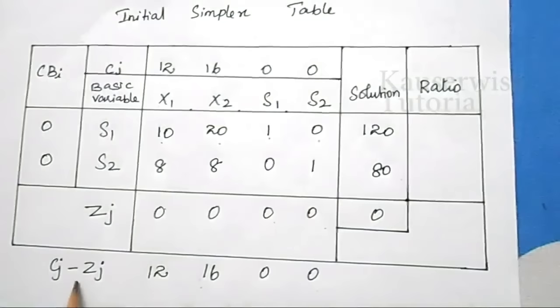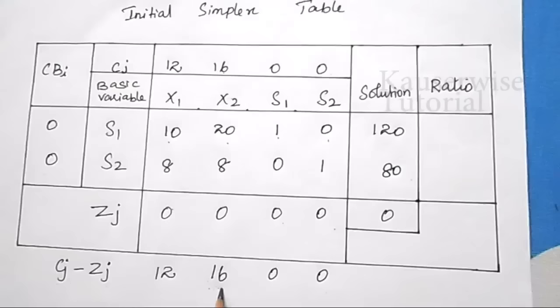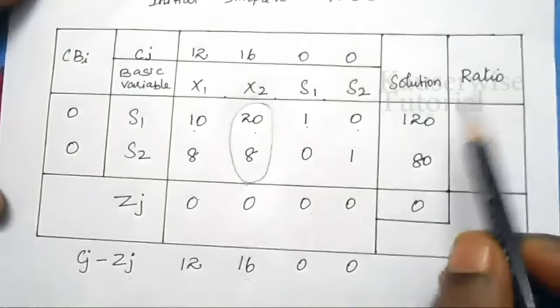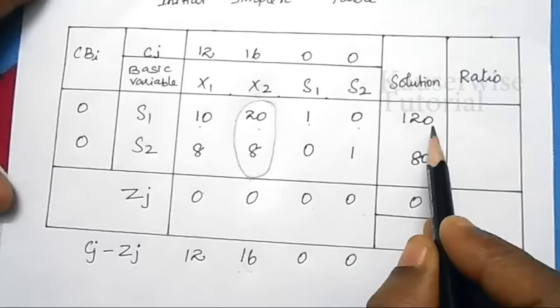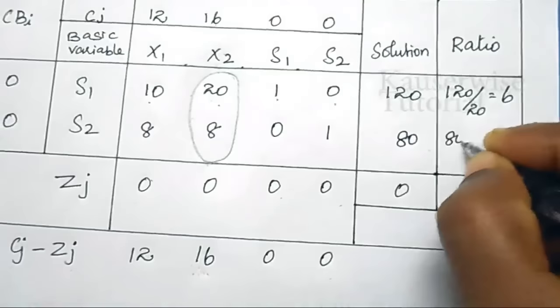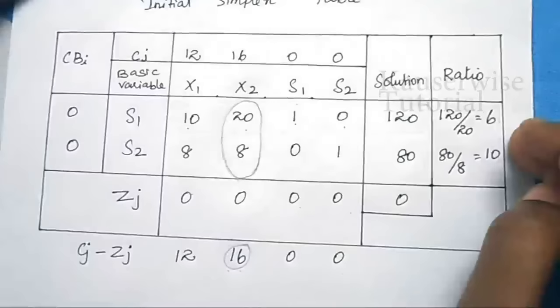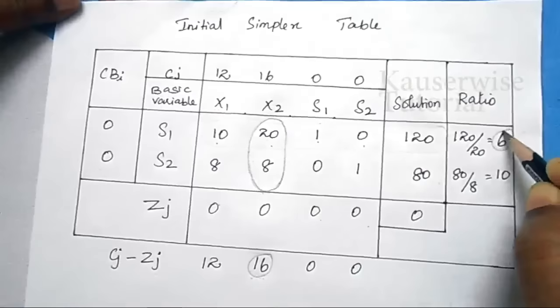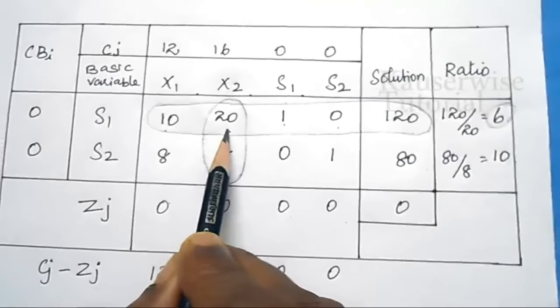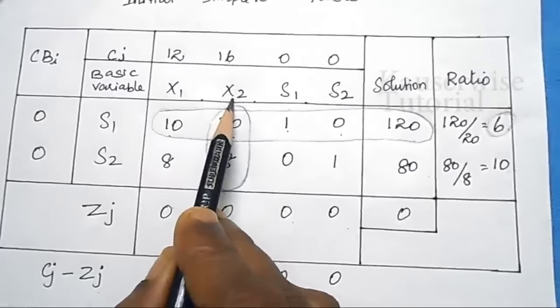To proceed further, select the maximum value in cj minus zj. Here 16 is the maximum value, so this column is called the key column. After finding the key column, find the ratio between the solution column and the key column. For the first row: 120 divided by 20 equals 6. For the second row: 80 divided by 8 equals 10. Select the least ratio value — 6 — so that row is the key row. X2 is the entering variable and s1 is the leaving variable.